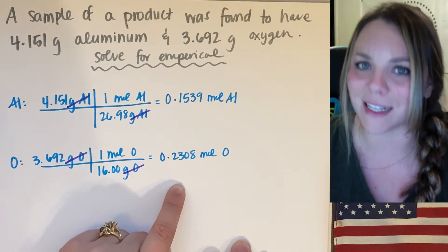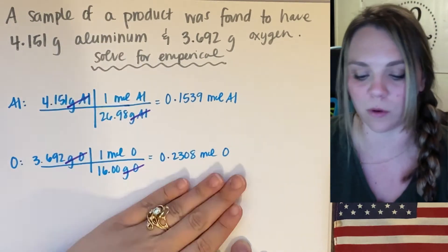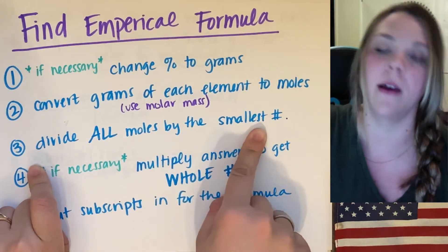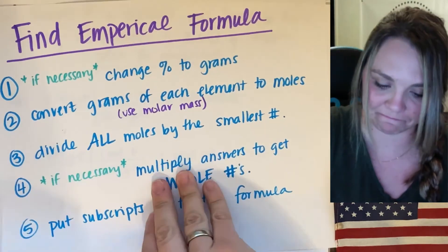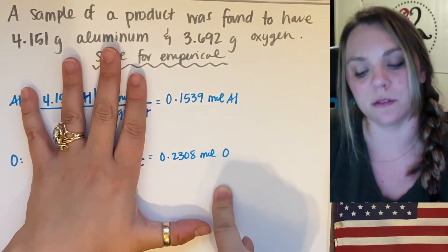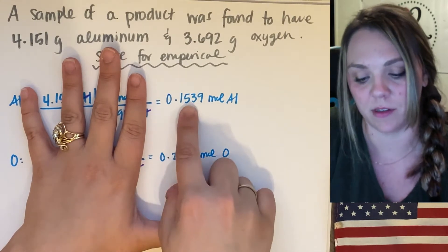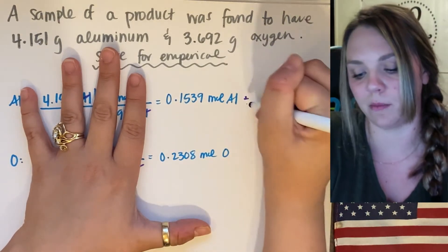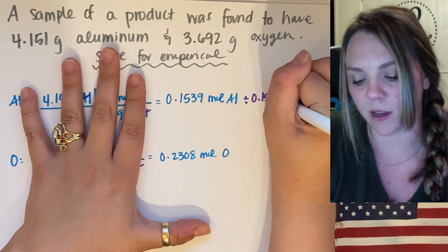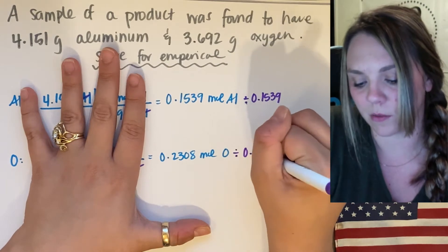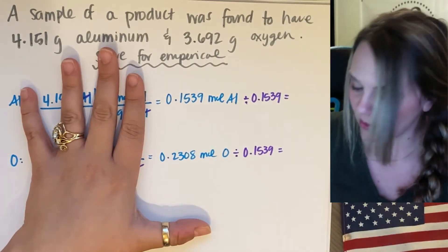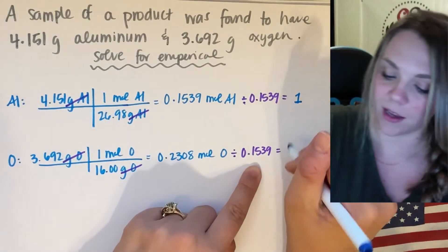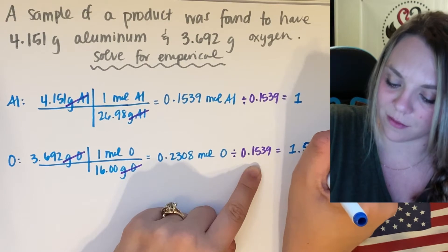Empirical formulas can give you some weird decimals — just roll with it. Step three: divide all moles by the smallest number. So I have 0.15 and 0.23. Since 0.15 is smaller, I'm going to divide both by 0.1539. I get an answer of 1 for aluminum and 1.5 for oxygen.